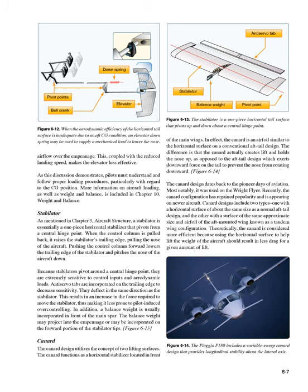The canard design utilizes two lifting surfaces, with the canard functioning as a horizontal stabilizer located in front of the main wings. Unlike the conventional aft tail, which exerts downward force to prevent the nose from rotating downward, the canard actually creates lift and holds the nose up. Dating back to the Wright Flyer, the canard configuration has regained popularity on newer aircraft. Canard designs include two types: one with a surface similar in size to a normal aft tail, and one with a surface approximating the aft wing size, known as a tandem wing configuration. Theoretically, using the horizontal surface to help lift the aircraft's weight results in less drag for a given amount of lift.